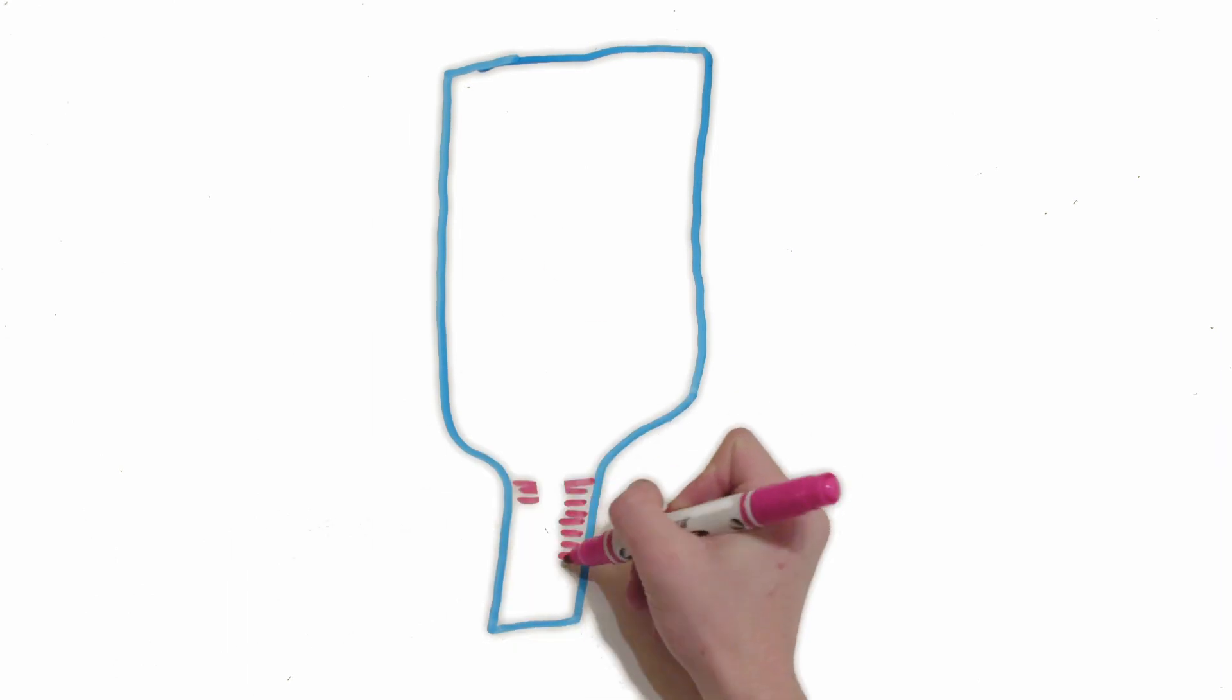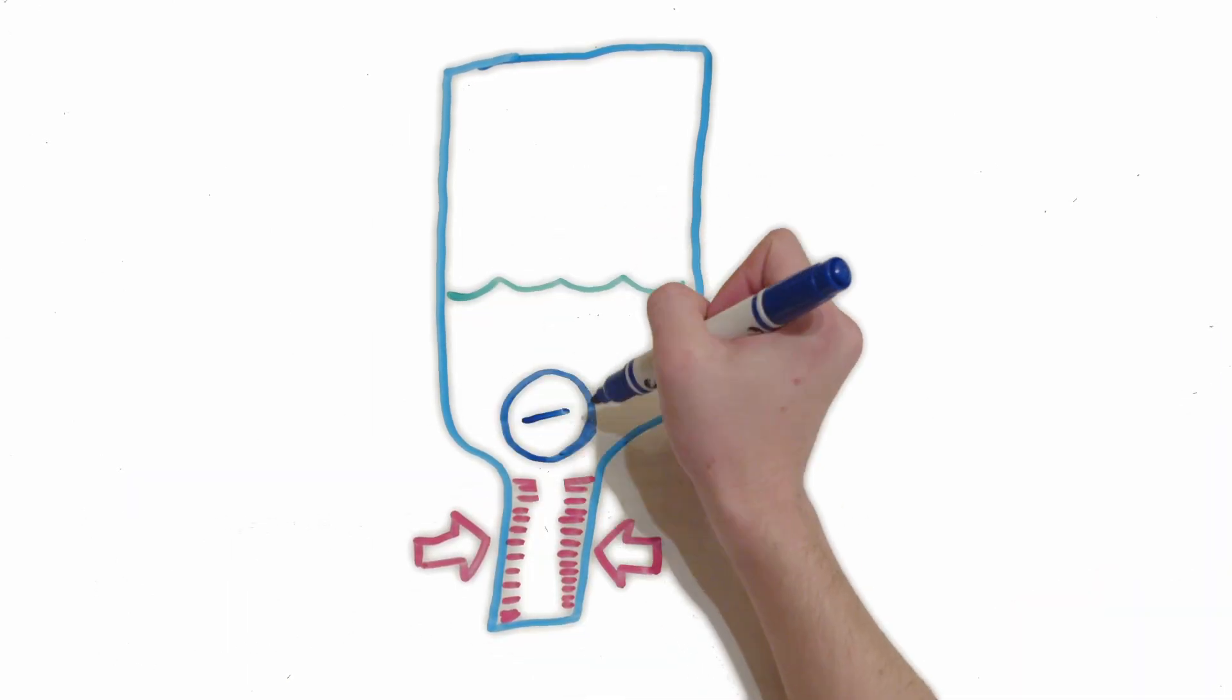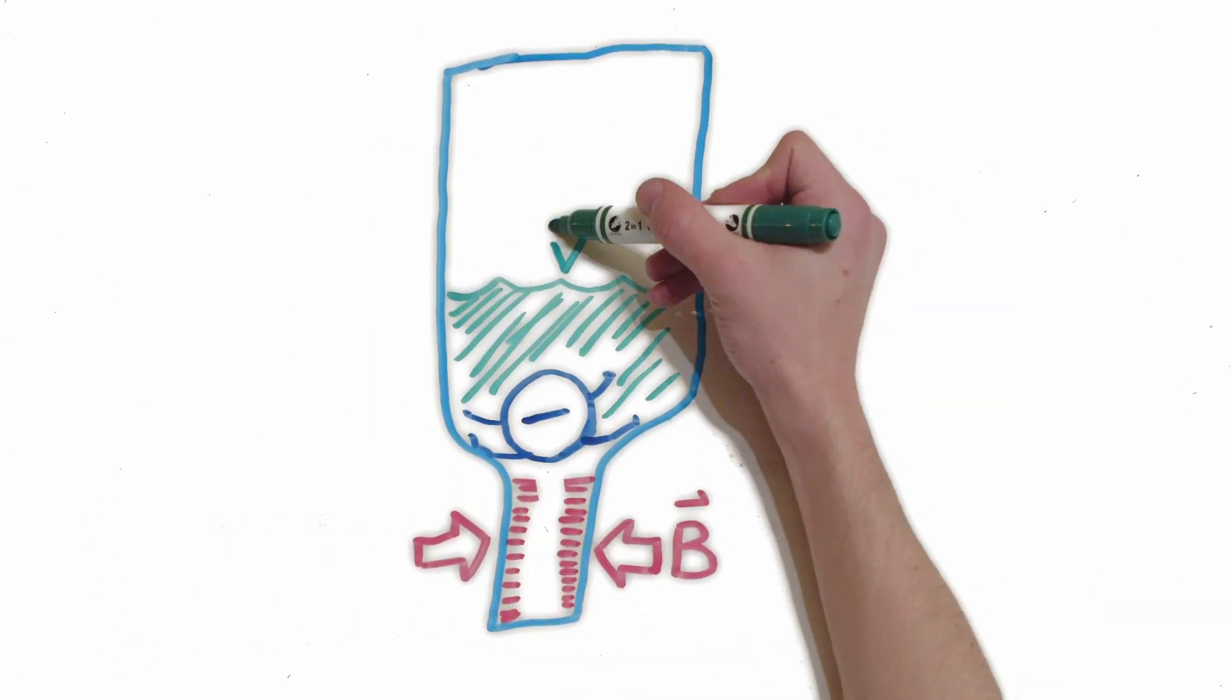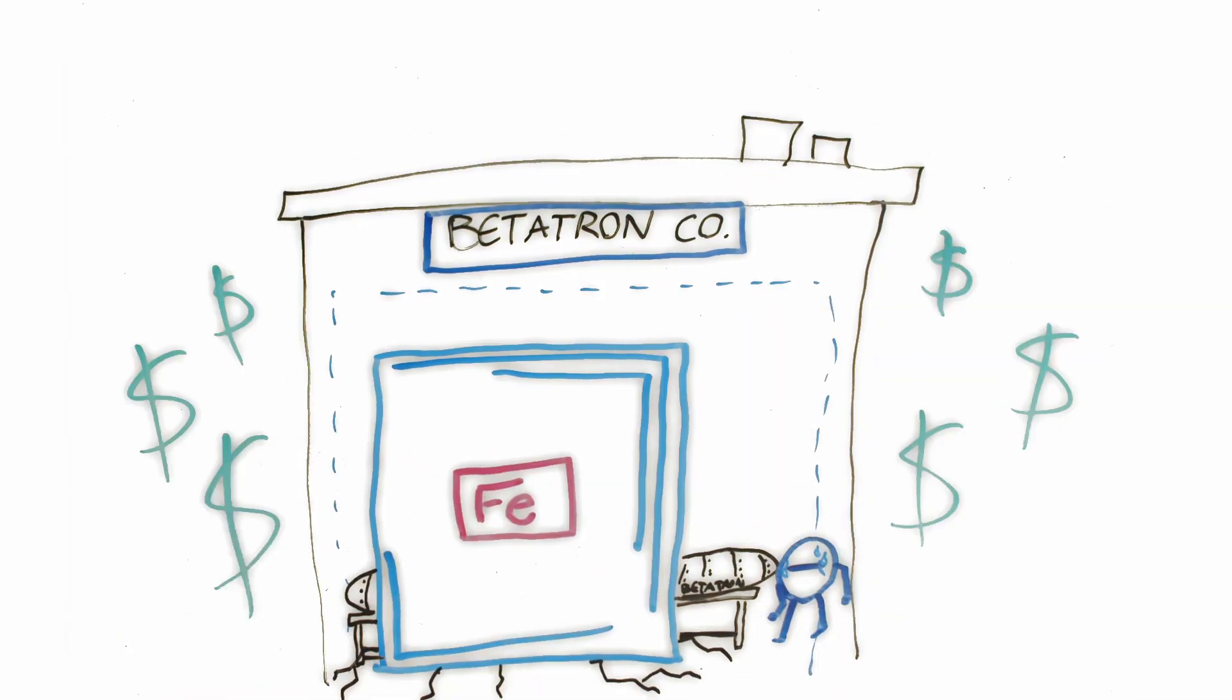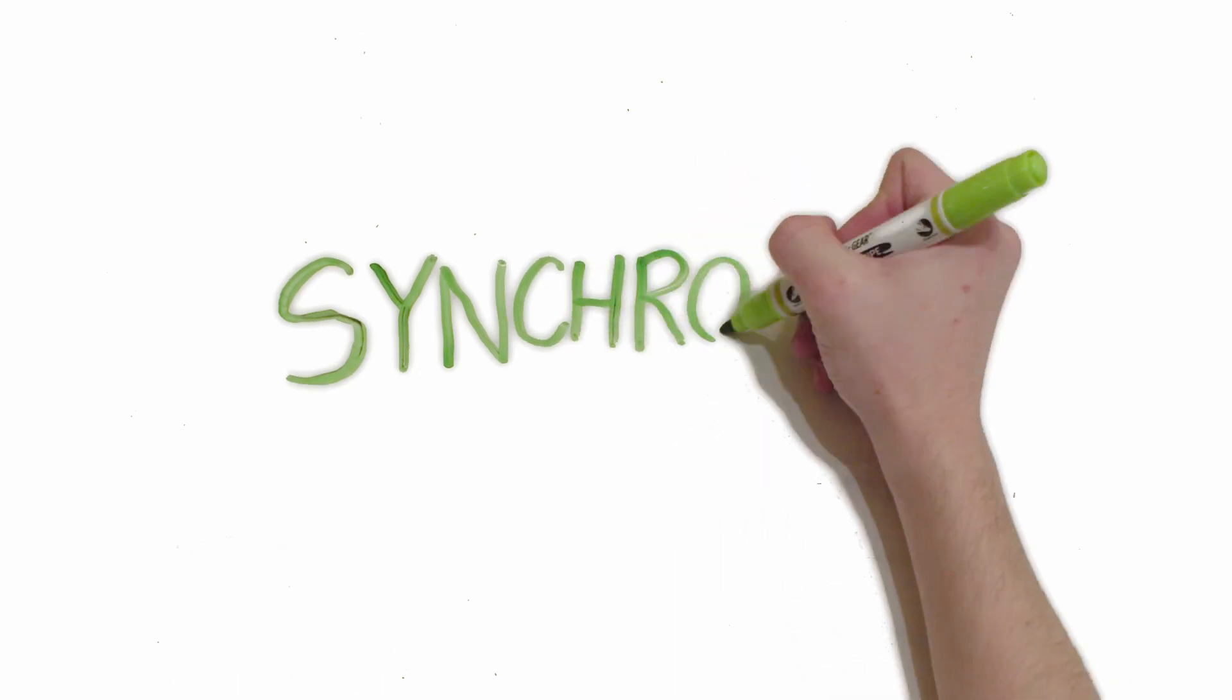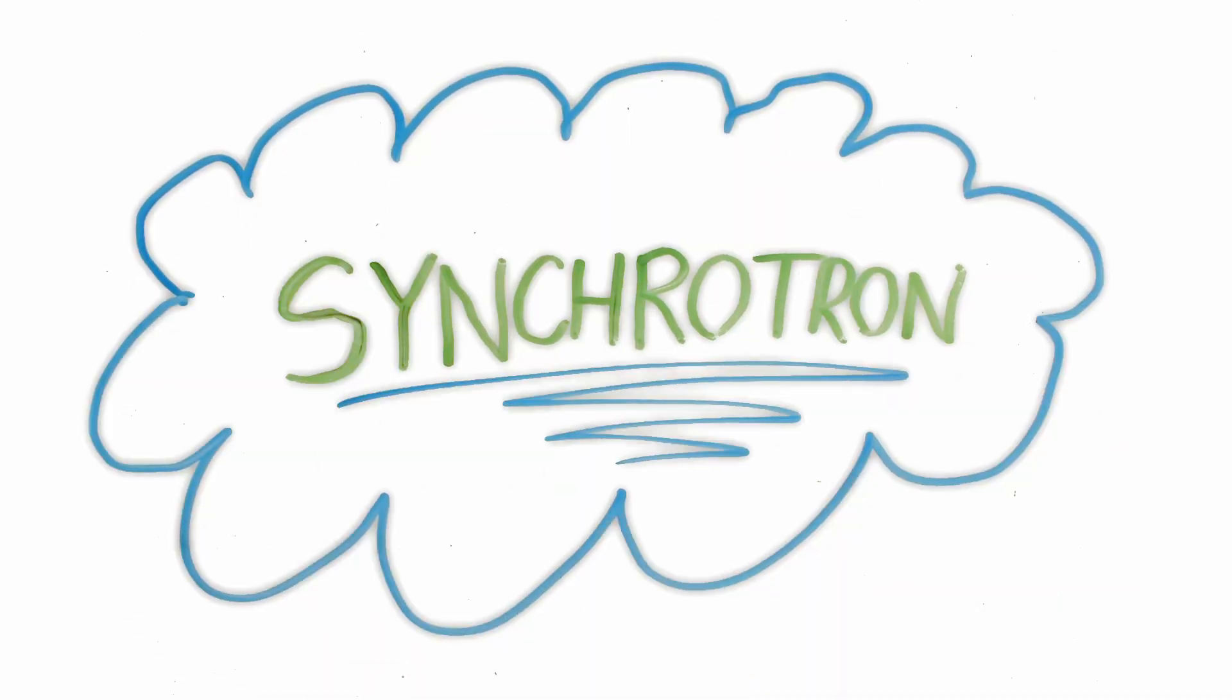Limitations of the betatron. The strength of the magnetic fields limits the maximum amount of energy that was imparted. This is because of the saturation of iron and the practical size of the magnetic core. The cyclotron, the successor of the betatron, was able to overcome these issues.